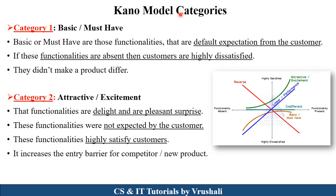Now let's focus on the Kano model categories. In this particular diagram, on the x-axis we have functionality absent to functionality present. On the y-axis, customers are highly satisfied to highly dissatisfied. This is the structure of the Kano model.